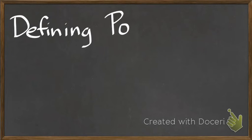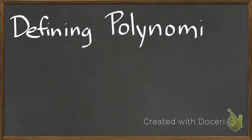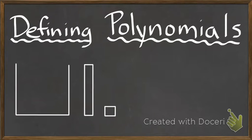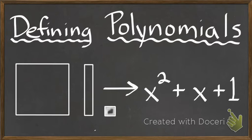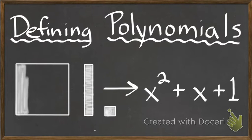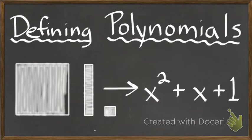In today's lesson we're going to be looking at defining polynomials. Polynomials can take the form of variables and constants in various combinations, or you might also see them as shapes. For example, these shapes — like little squares, big squares, and rectangles — are called algebra tiles, and we'll look at these more later on.